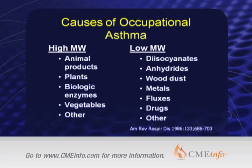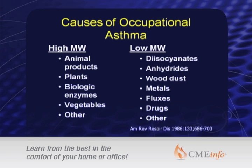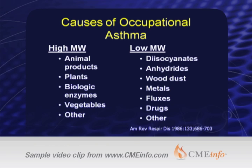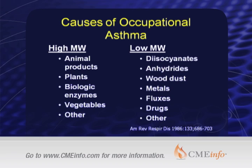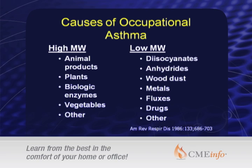The classic high molecular weight agents include flour dust, which has allergens that can cause IgE antibodies, and animal products. The classic low molecular weight agents — probably the ones you will see the most — are isocyanates, because they're used in so many industries, including plastics, spray painting, and others. If a patient comes in and brings literature on their work environment, there are ways to search whether those agents have been reported to cause asthma.